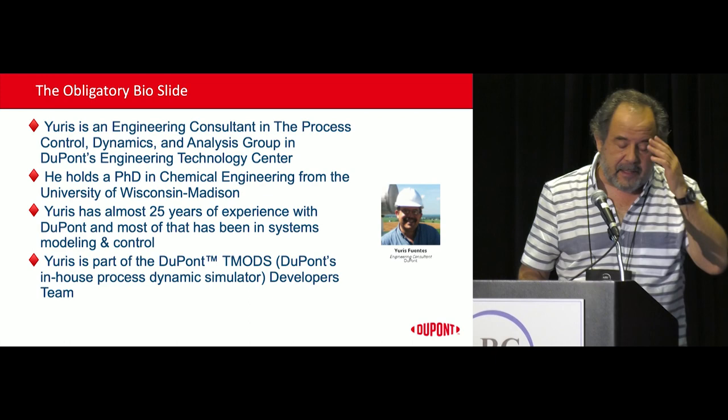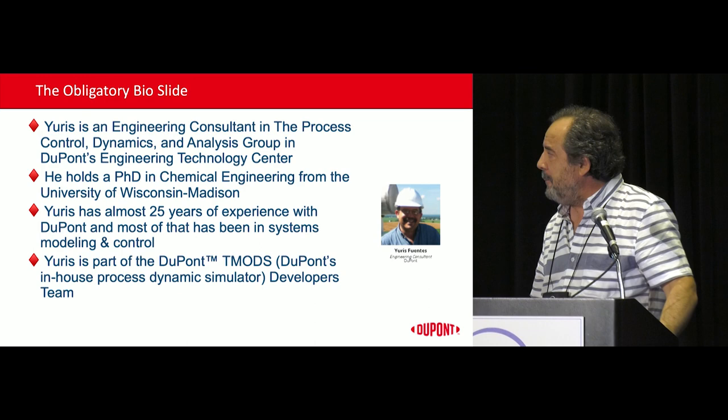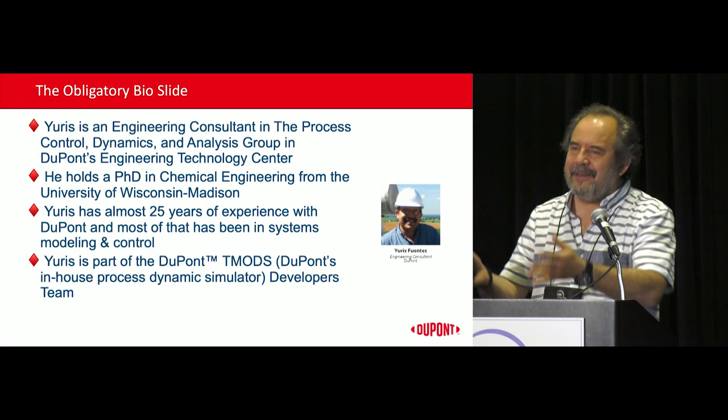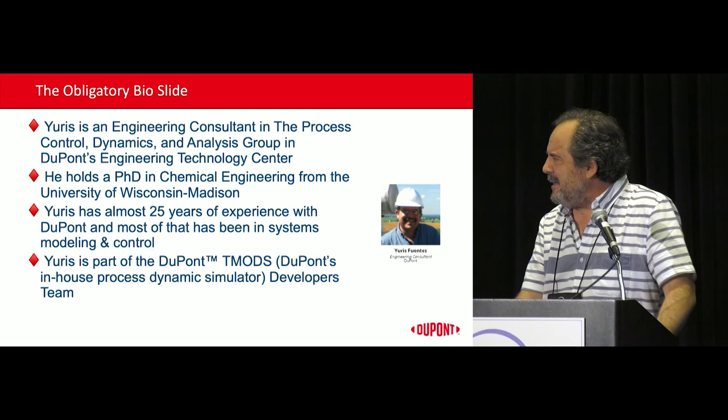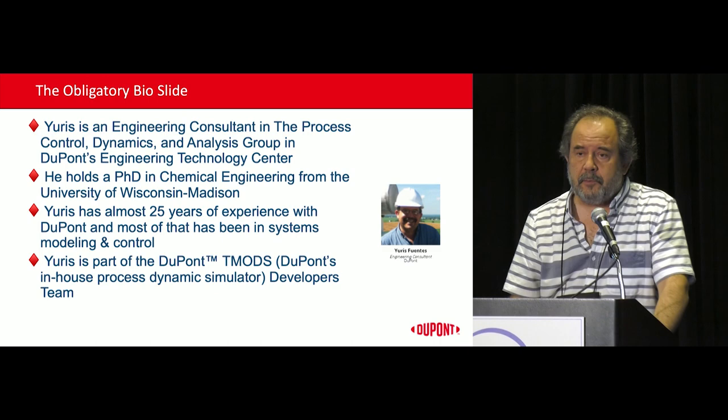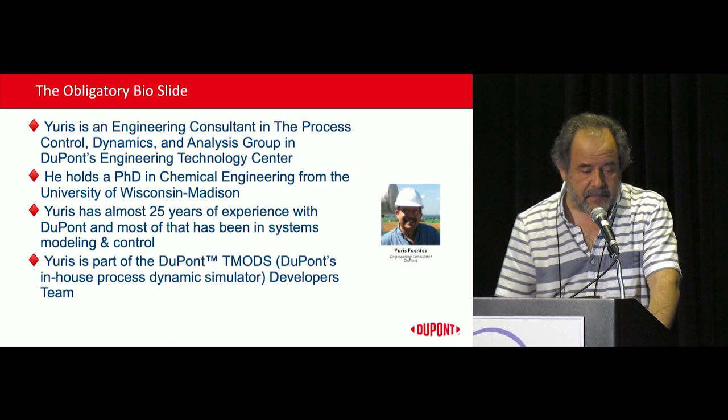A little bit about me. I'm a chemical engineer. I'm in the process dynamics, process control dynamics and analysis group at DuPont. I've been there for almost 25 years. All this time doing some kind of mathematical modeling or computational modeling or numerical modeling, you name it, it's been there. And for the last, I would say, like 12 years, I've been involved more in process simulation, process modeling. And that's where the last item there — I'm part of the team that supports the simulation software that we use at DuPont. It's an in-house dynamic simulator.